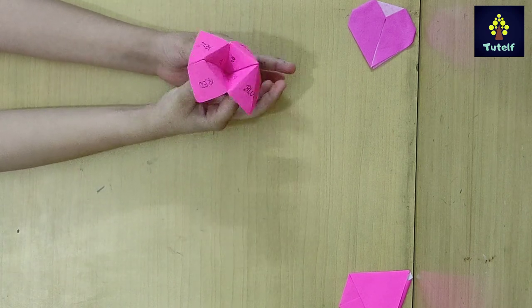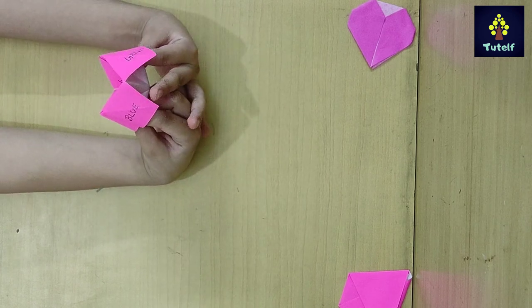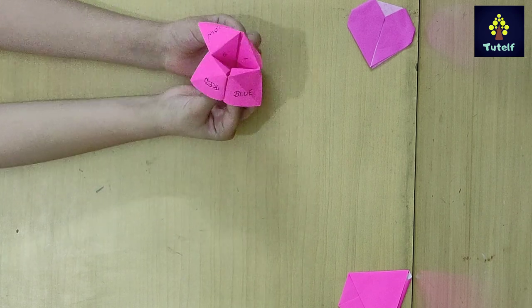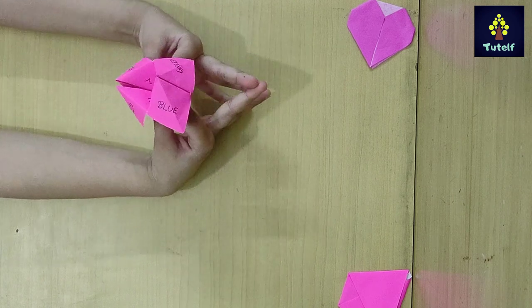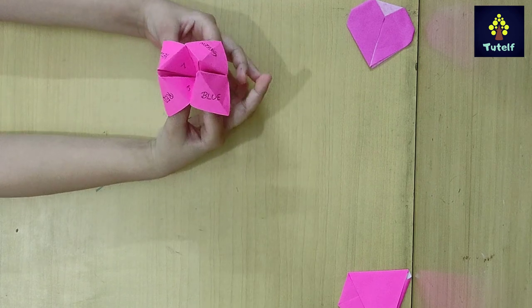Tippy tippy tap which number you want. Your options are 1, 2, 5 and 6. Six. And one more number from 3, 8, 4 and 7. Seven. Okay.